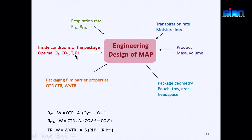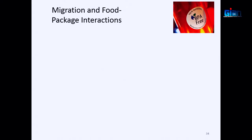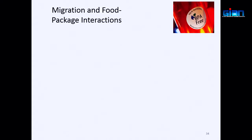Another important packaging topic is migration and food-package interaction. This is not about gas transmission, but about migration of components present within the packaging polymer. Beyond the polymer itself, polymeric films contain additives — chemicals added to improve manufacturability.